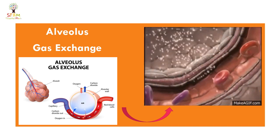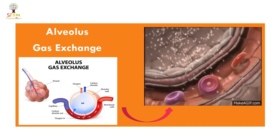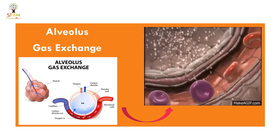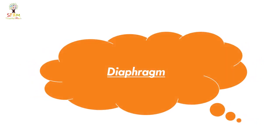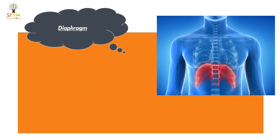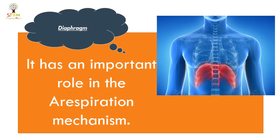The last organ is the diaphragm. It's a muscle that separates the thoracic cavity and abdominal cavity. It has an important role in the respiration process. We will discuss it in the next session.